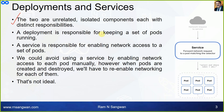A deployment is responsible for keeping a set of pods running — that's what we have learned. A service is responsible for enabling network access to a set of pods. Network requests go to a service, and the service forwards those requests to a pod matching the selector — for example, select pod where label is equal to ABC. Label selectors play a very vital role in this.